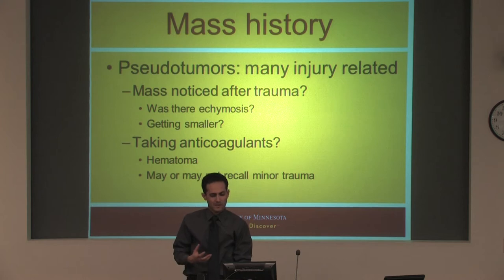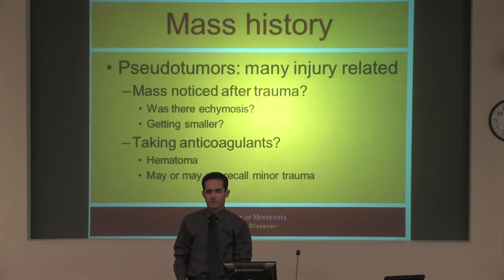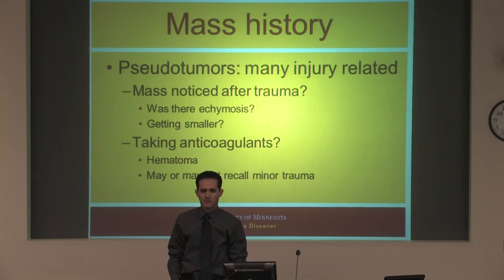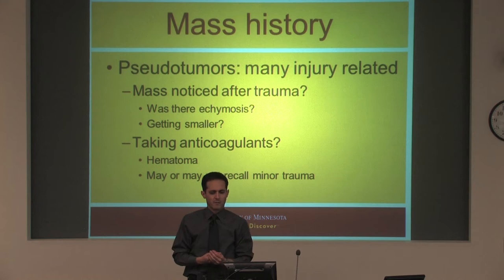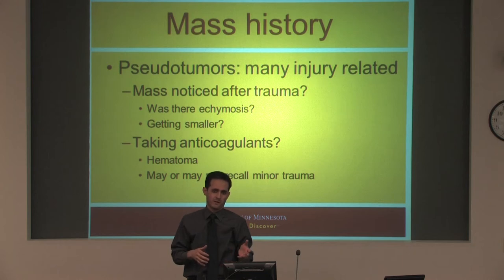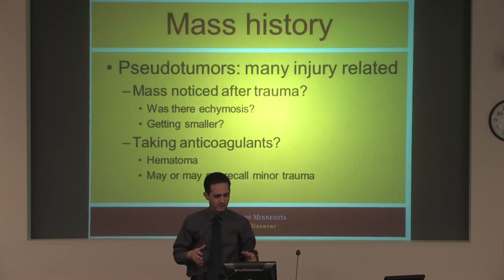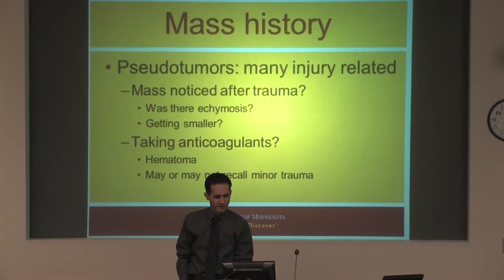Pseudotumors — many of these masses that don't turn out to be tumors are injury-related. Ask about ecchymosis. Is it getting smaller? Try to get a history; that will help you out. They take anticoagulants — everybody seems to be on aspirin, a platelet inhibitor, or Coumadin — so they can get hematomas with relatively minor trauma, trauma they may not even quite recall. So the history can be a little soft even if they have a hematoma.